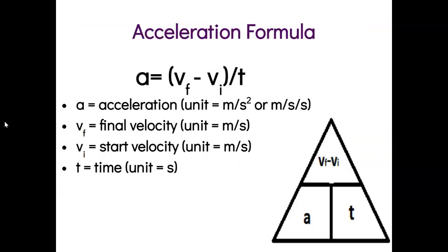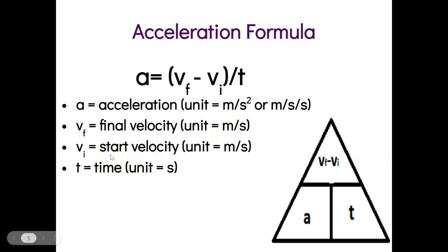Here is the acceleration formula you need to know. Make sure you write it in your notes — you won't have to memorize it, it'll be given to you on your test and final exam. Acceleration equals final velocity minus initial velocity over time: A = (Vf - Vi) / t. The units for acceleration are meters per second squared. Vf is final velocity in meters per second, Vi is initial velocity in meters per second, and t is time, typically in seconds.